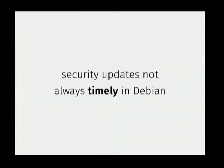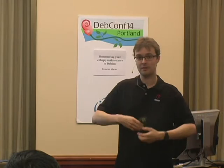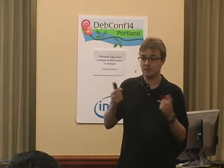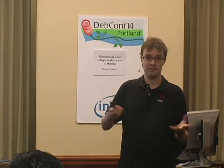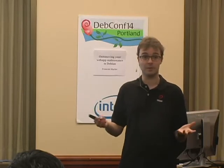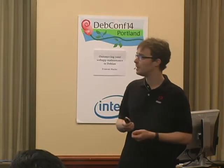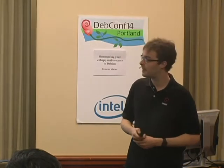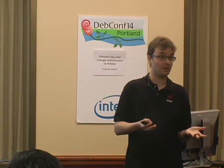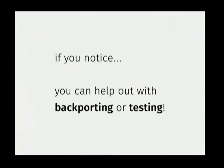Another thing that was pointed out to me is that sometimes security updates are not always timely in Debian. That's not to criticize the people maintaining my dependencies, but sometimes there's lots of vulnerable stuff in the archive and it takes time to go around and fix them all. It can be a couple of days, and sometimes weeks, especially if nobody notices, before the Debian package is updated. The first case is that you actually notice the package is out of date and there's been a security fix upstream — because you're already following the RSS feed or the security newsletter — in which case you can help out with backporting or testing the fix.